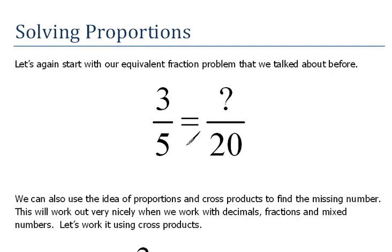We've already done this problem before when we created equivalent fractions. Just to refresh your memory, when we create equivalent fractions we're saying, what do I have to multiply 5 by in order to get 20? Well, that would be 4. I can do the same exact thing to the top, and 3 times 4 would be 12. So we have created that equivalent fraction. 3 fifths is the exact same thing as 12 over 20.